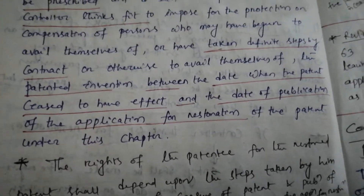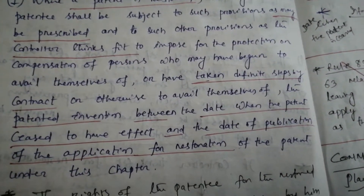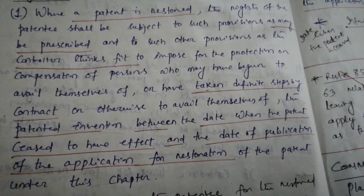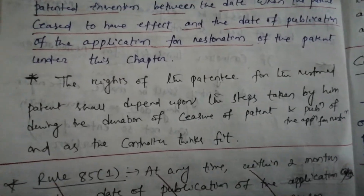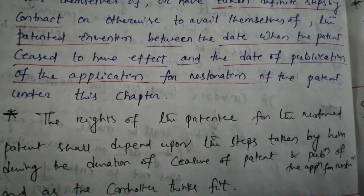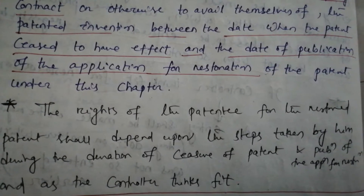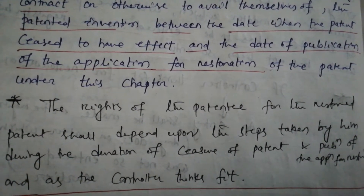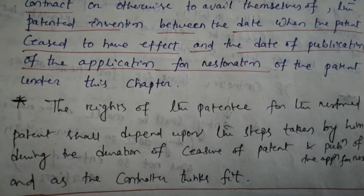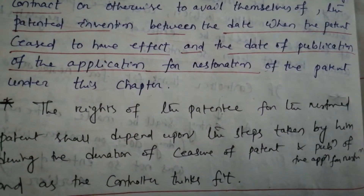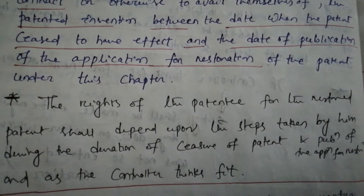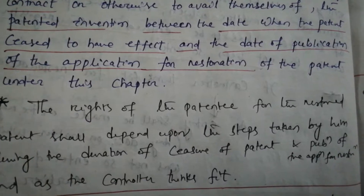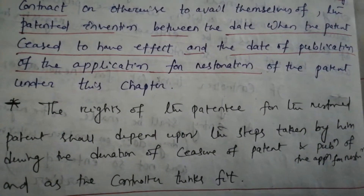The gist of this subsection is that the rights of the patentee for the restored patent shall depend upon the steps taken by him during the duration between the seizure of the patent and the publication of the application for restoration. There is a time gap between the seizure of the patent and the publication of the application for restoration.